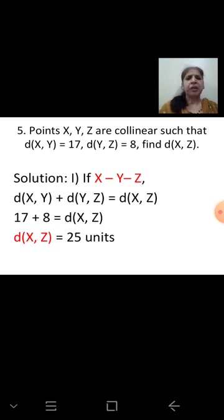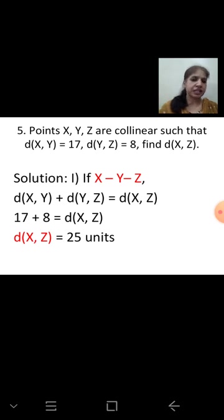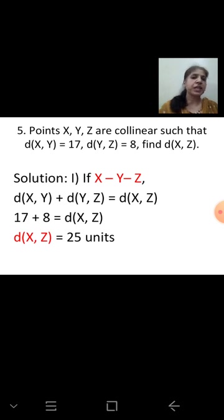Next question: points X, Y, Z are collinear. Distance XY = 17, distance YZ = 8. Find distance XZ. Consider all possibilities. Case 1: Y lies between X and Z, so X–Y–Z. Then XY + YZ = XZ, giving 17 + 8 = 25. So distance XZ = 25 units.